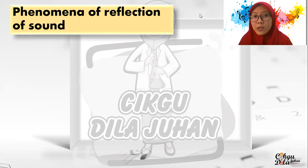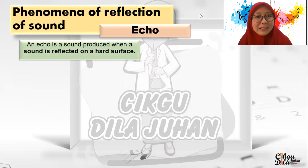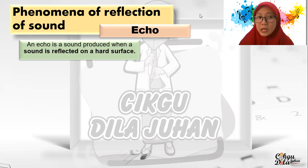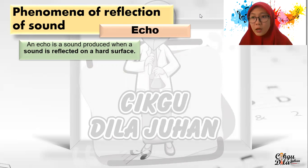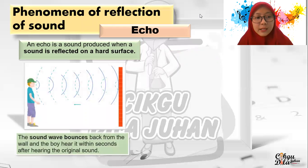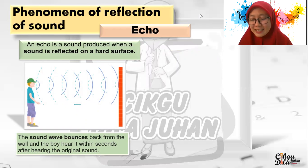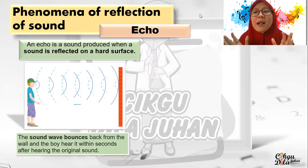Now we move to the phenomena of reflections of sound. The first one is echo. An echo is a sound produced when sound is reflected off a hard surface. The sound wave bounces back from the wall and you hear it within a second after hearing the original sound. For example, when you are shouting in front of a cave, after a few seconds you can hear your voice again — like 'help, help, help' — that is an echo.